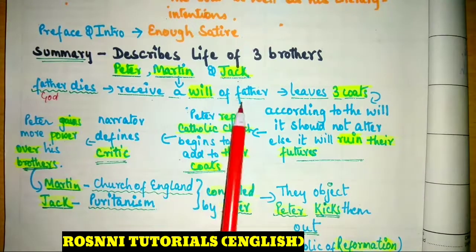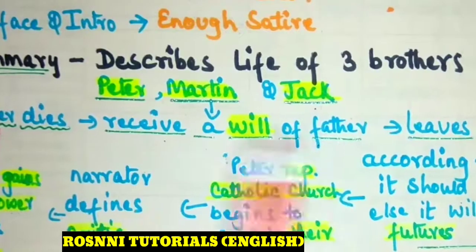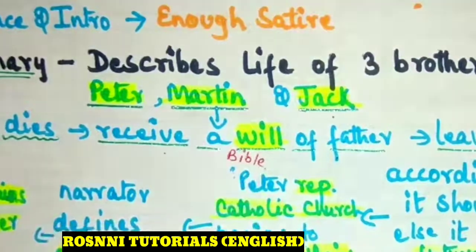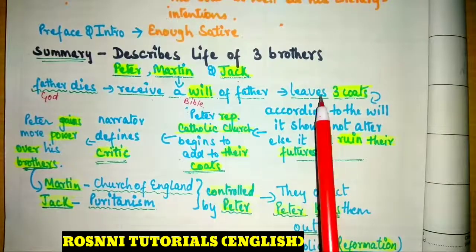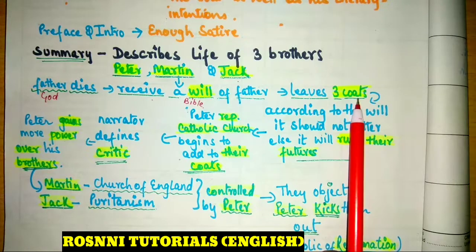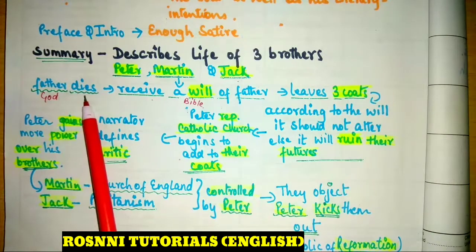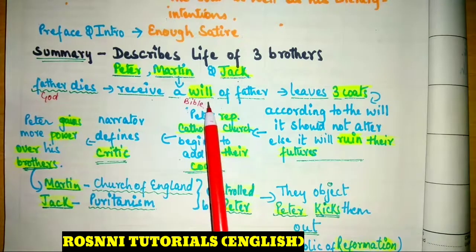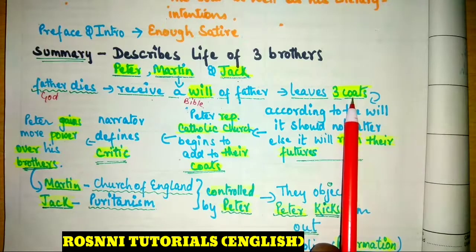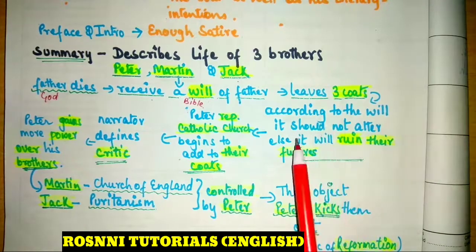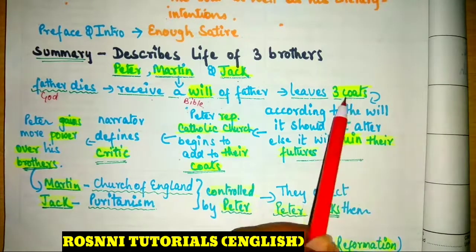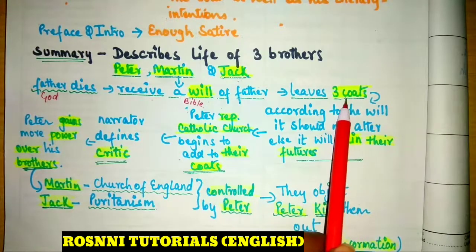The will that the father leaves for his sons is regarded as the Bible. He also leaves three coats for his three sons — Peter, Martin, and Jack. According to the will, the coats should not be altered; it should be kept intact, else it will ruin their future. Peter represents the Catholic Church and he begins to add decorations to their coats — he wants to beautify them. The will represents the Bible, and the three coats represent the teachings of the Bible. So according to Peter's will, he is changing the sayings and preachings of the Bible — that is what Jonathan Swift wants to show the reader.